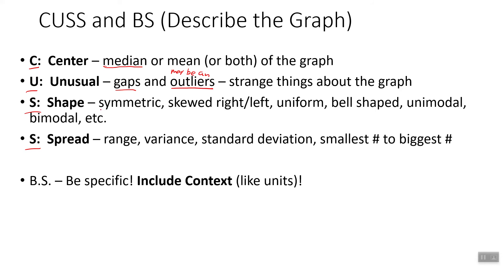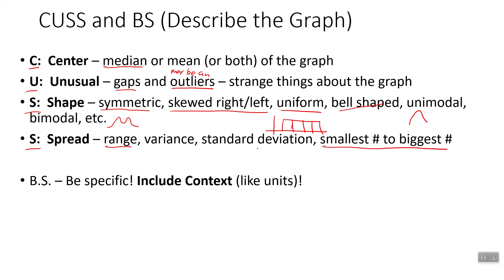For shape, we've gone over symmetric, skewed right, and skewed left. We've also talked about uniform — a graph where all the bars are the same height. Unimodal means it's got one hump; bimodal means it's got two humps. But really what they want at this point is symmetric, skewed right, or skewed left. For spread, we've gone over range — from the smallest to the biggest number. We haven't done standard deviation or variance yet. Remember to be specific — include context — and don't forget to include context in at least one of these parts.